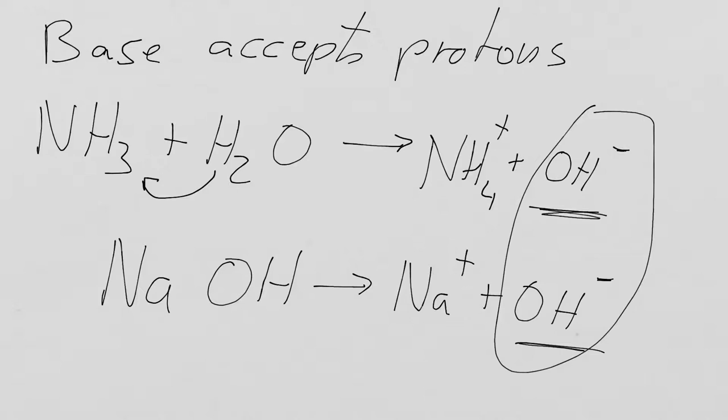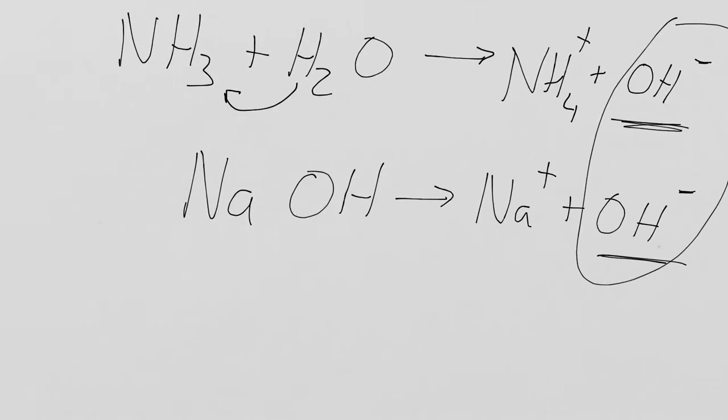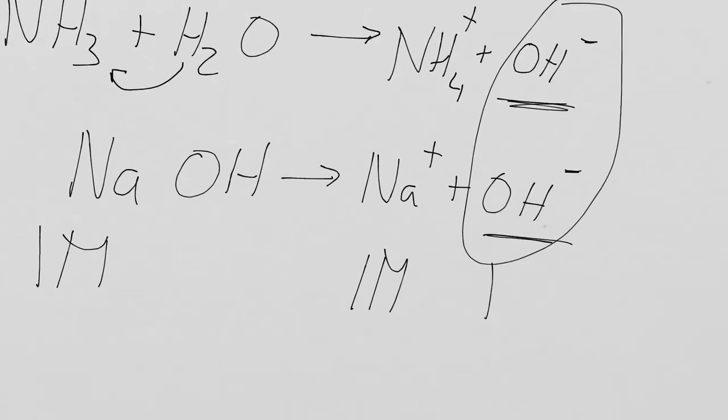And again, we have this stoichiometry. If we have, for example, one molar NaOH, we end up with one molar sodium ions and one molar hydroxide ions. Happy with that? I think it's not terribly conceptually difficult, this stuff.